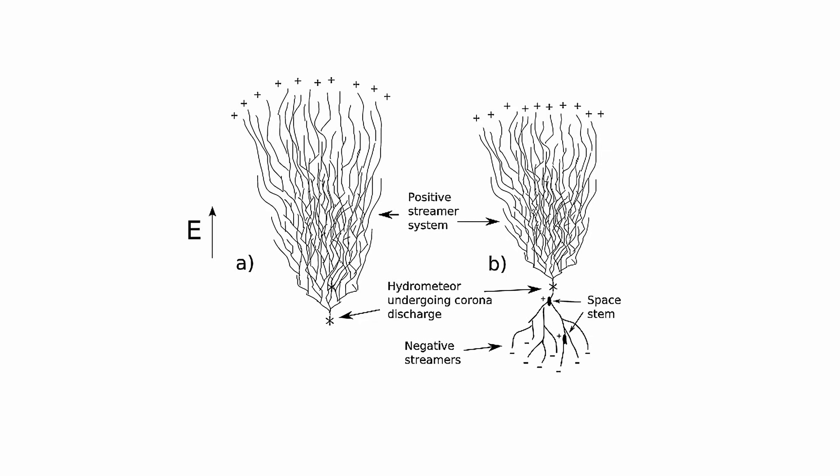It's well established that positive streamers can propagate in weaker electric fields in comparison to negative ones, causing them to form earlier than the negative counterparts in natural conditions.